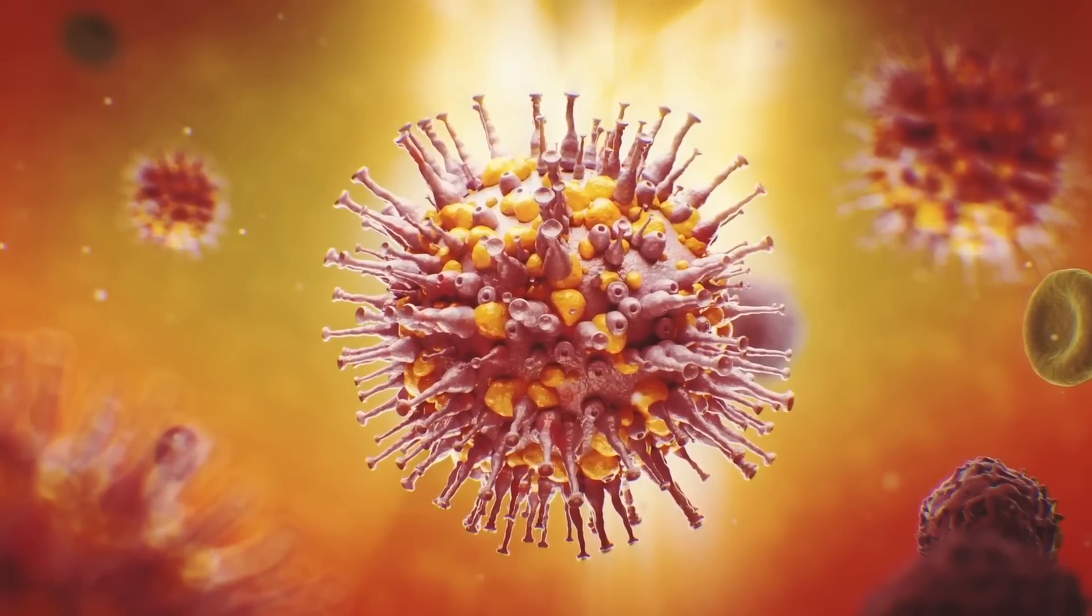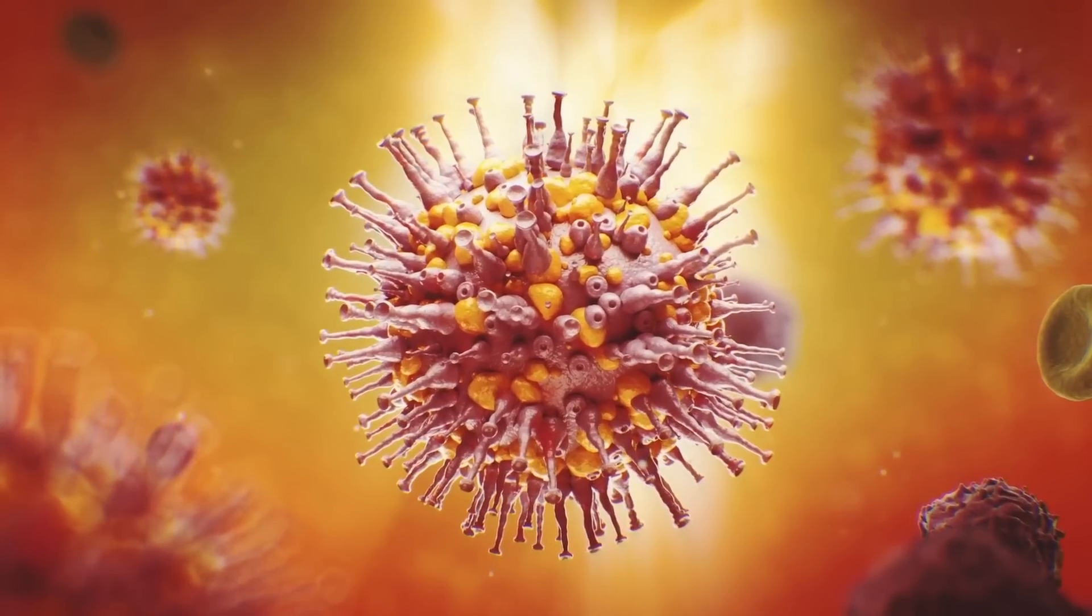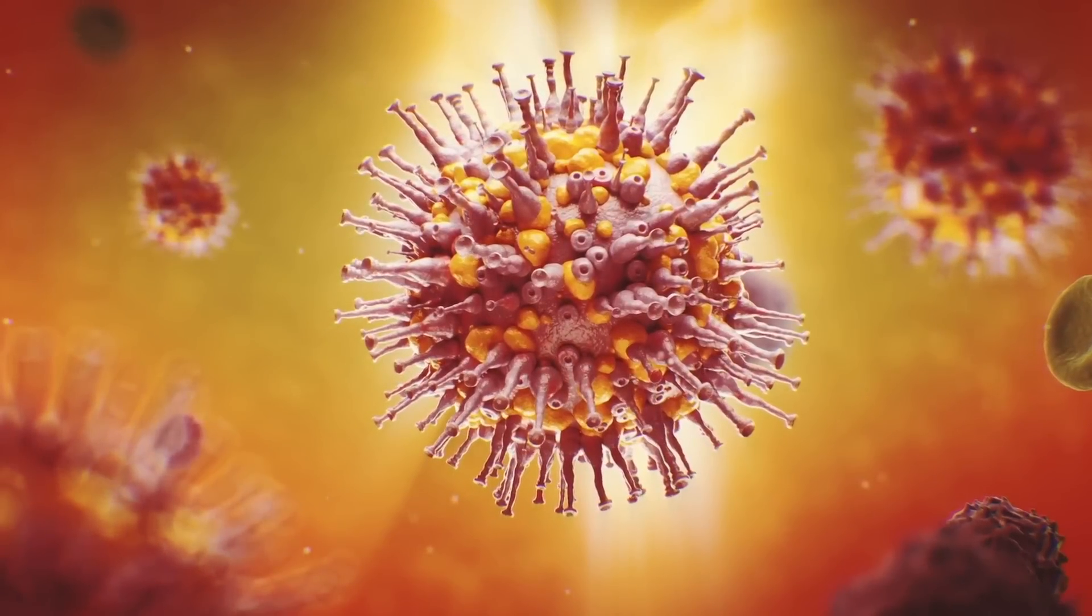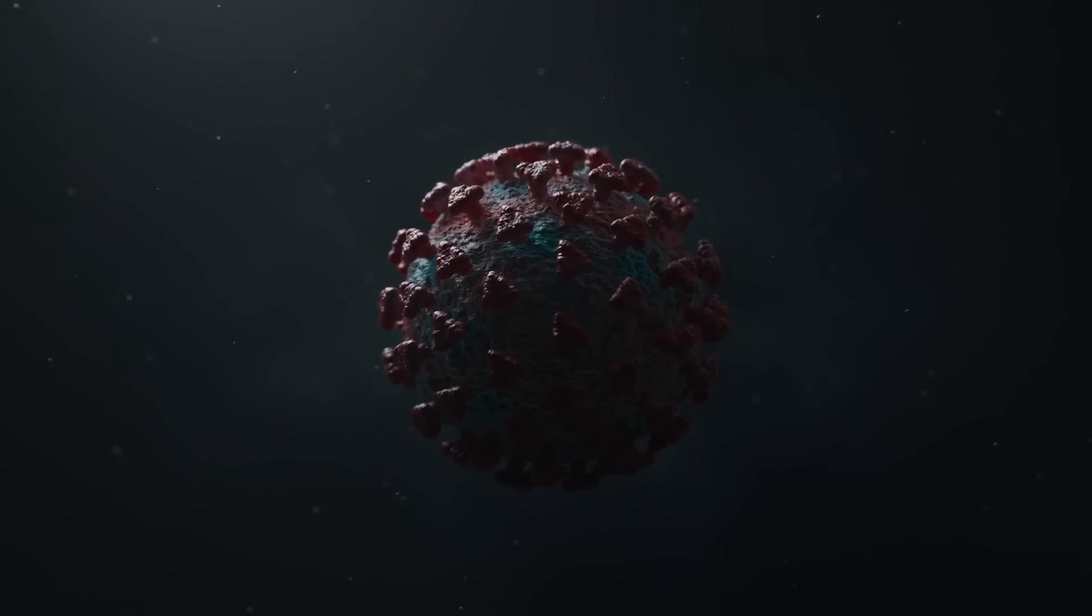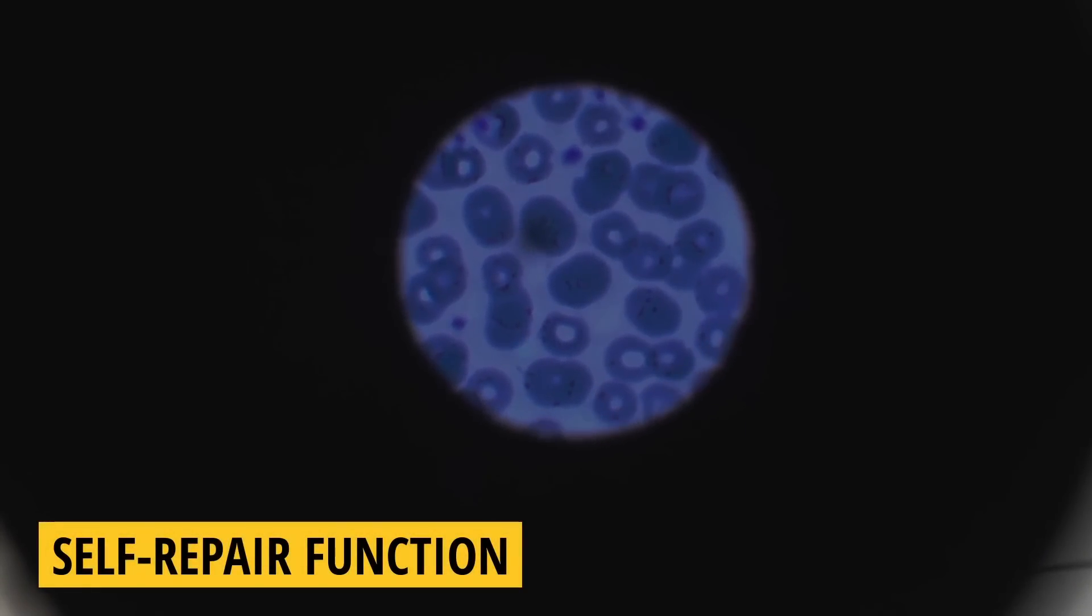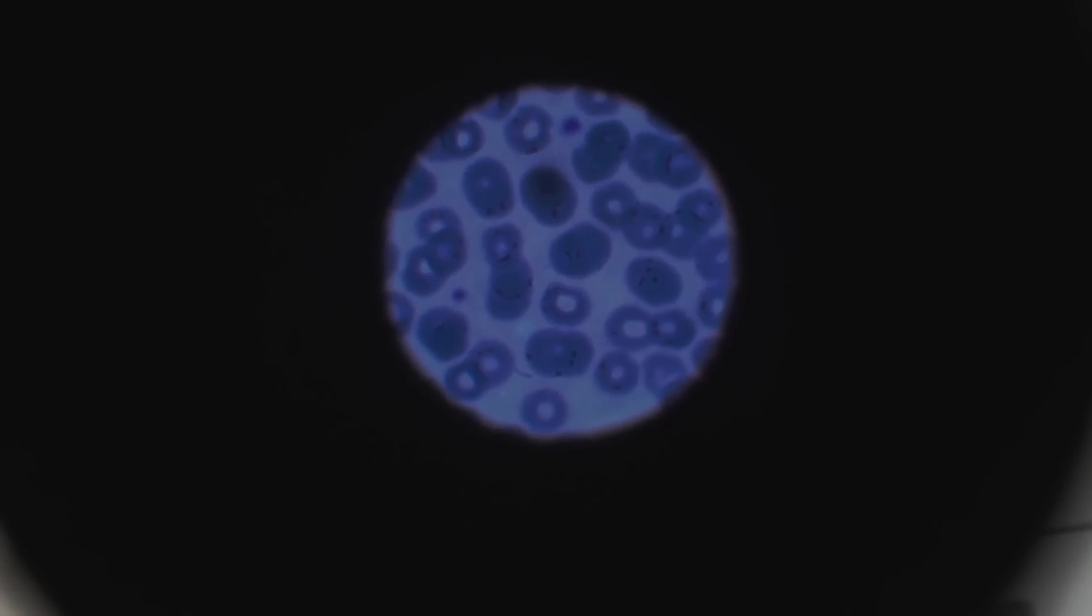However, the cell may have a small probability of making errors when dividing, and the copied cell is different from the original. Such abnormal cells may not work as normally as the original cell. Our cells have self-repair functions. It repairs itself when the replication goes wrong, but this repair function has limitations. It cannot fix all errors.